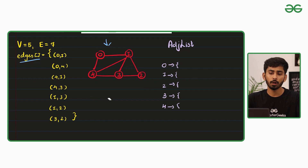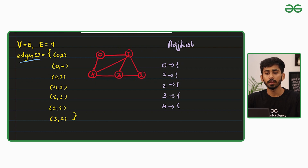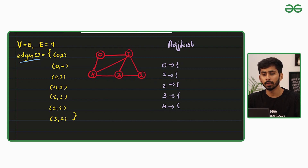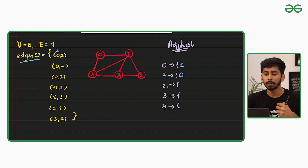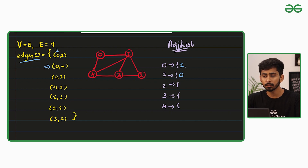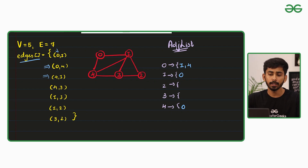Now, how do you solve this? I will iterate over the edges array and insert the adjacent nodes. The first pair is 0,1 — so at index 0 I add 1, and at index 1 I add 0, because this is an undirected graph so entries must be made in both lists. Moving to edge 0,4: at index 0 add 4 and at index 4 add 0. For edge 4,1: at index 4 add 1 and at index 1 add 4.